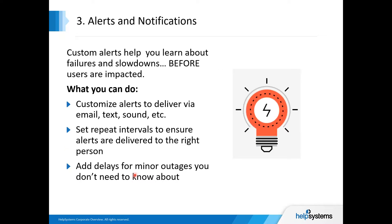Third is alert and notification. So mapping first and foremost, performance monitoring second, and then our ability to alert and notify using exception-based alerting. Visualization is great, but you also want to receive notification when something happens. You can customize your alerts and how they're delivered — whether sounds or email — set up intervals and recipients for when alerts are sent, and add delays based on specific outage behaviors in your environment.